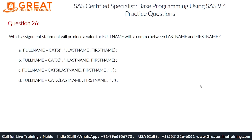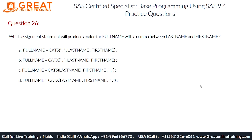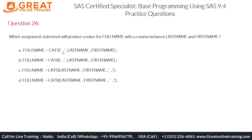To correctly place the comma between the last name and first name, we need to pick the option that uses the delimiter properly. Option A adds a comma before the last name, which is not what we want. The CATX function is used here but the delimiter is incorrectly placed, so option A is wrong. The CATS function concatenates strings removing leading and trailing blanks, without adding a delimiter.